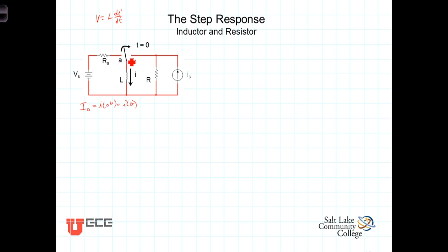At t equals zero, the switch now moves to this position. Unlike what we experienced in the natural response circuit, we have another source of energy in this new circuit. So over time, this current, which was established by this voltage source, is going to change to a current, a steady state current that is the result of this current source here.